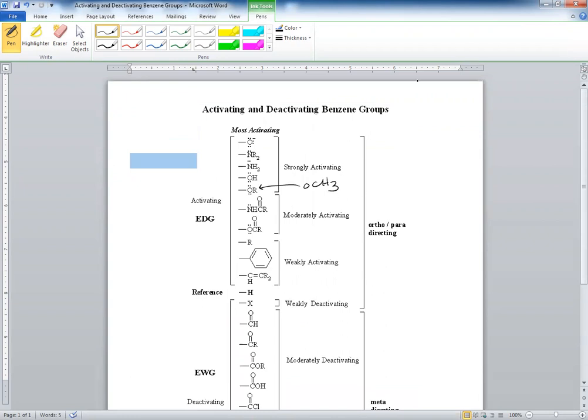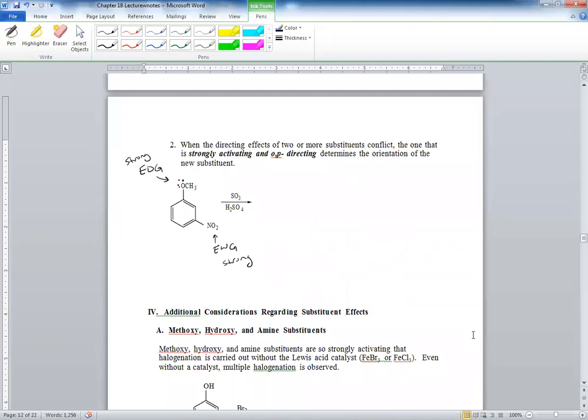So who would win? The strongly activating. That means you're going to add to the ortho and the para in relation to the strongly deactivating group. So again, this is ortho to the OCH3, the methoxy group. This is para in relation to the OCH3.